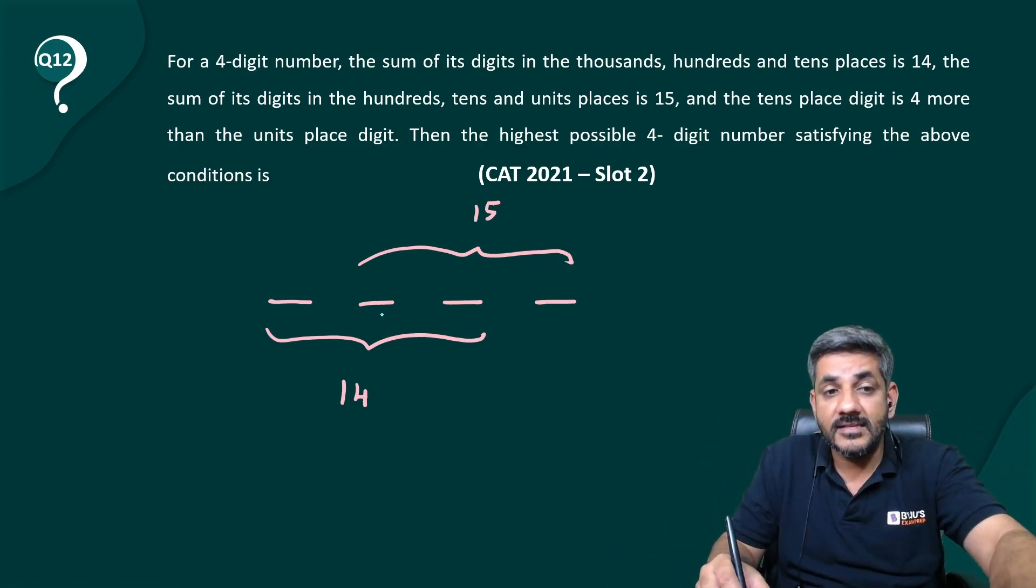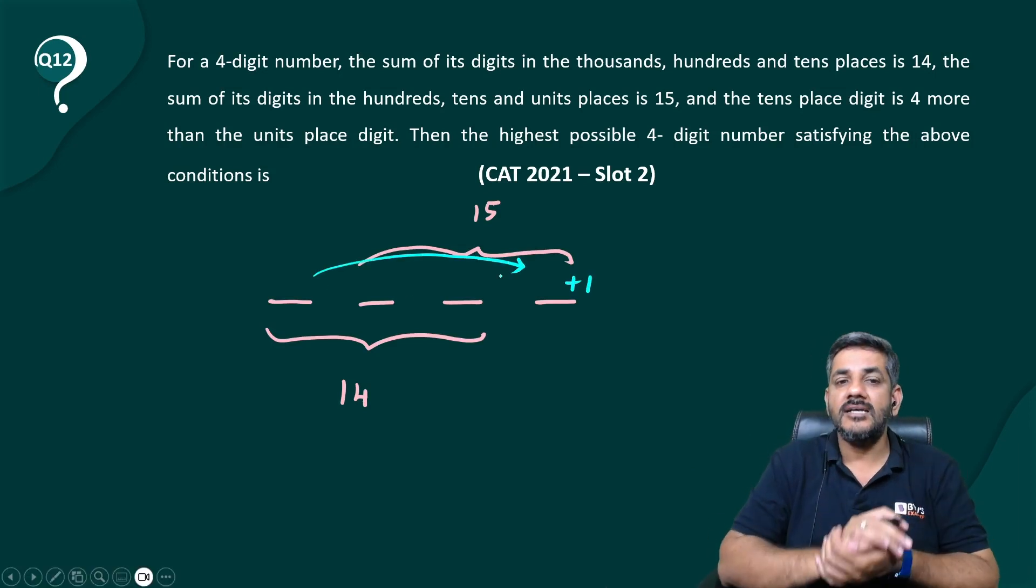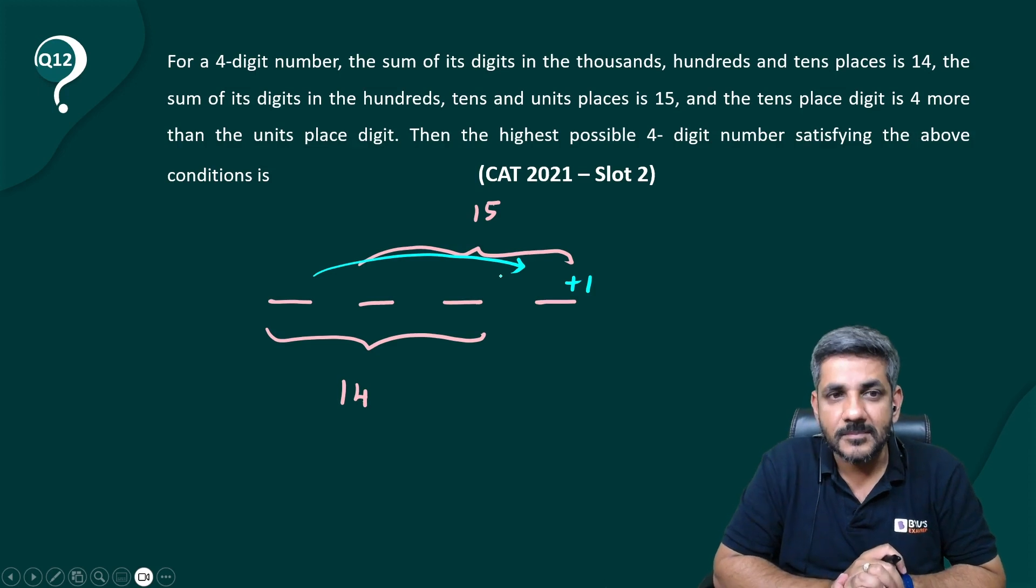So, I can straightaway say that the last digit is one more than the first digit, right? The last digit is one more than the first digit. What next?